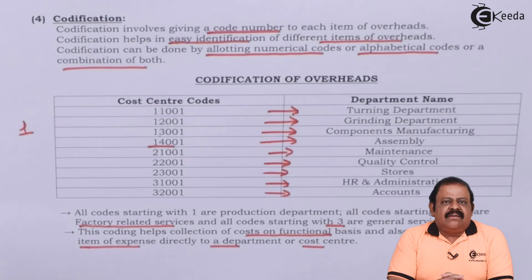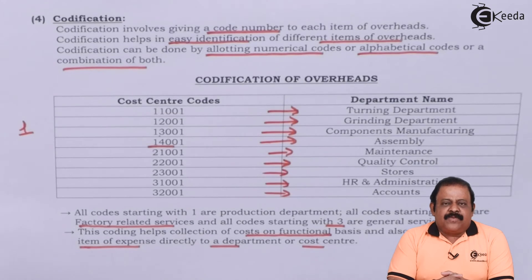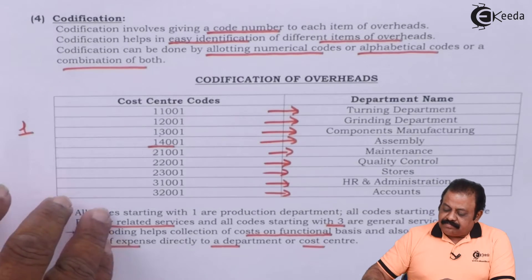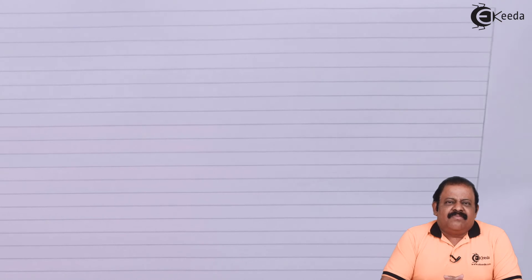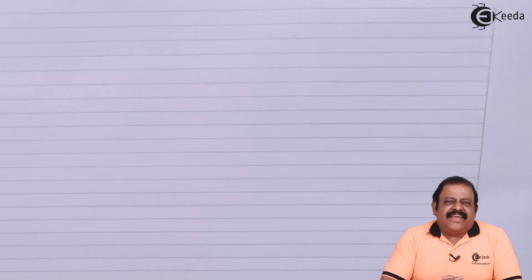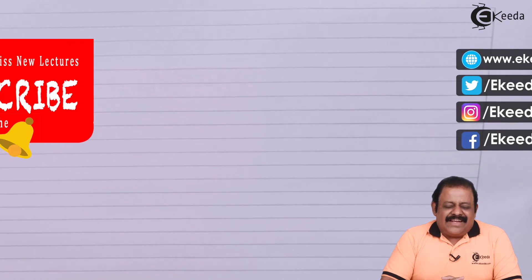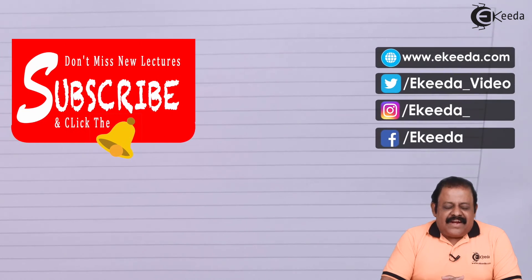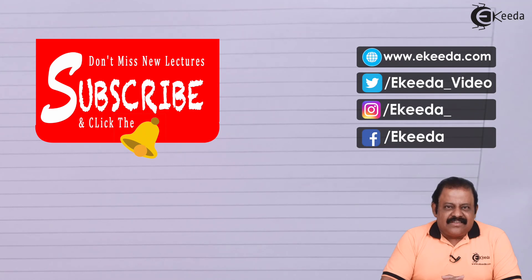After collection of data, the next step is codification — giving code numbers to particular expenses. We have understood the various steps by which an organization decides to allocate overheads to various departments: collection of information, codification, classification of overheads, and then apportionment of overheads, so that we can arrive at the total cost of the product. Thanks for watching this video — stay in tune with Ikida and subscribe to our channel.